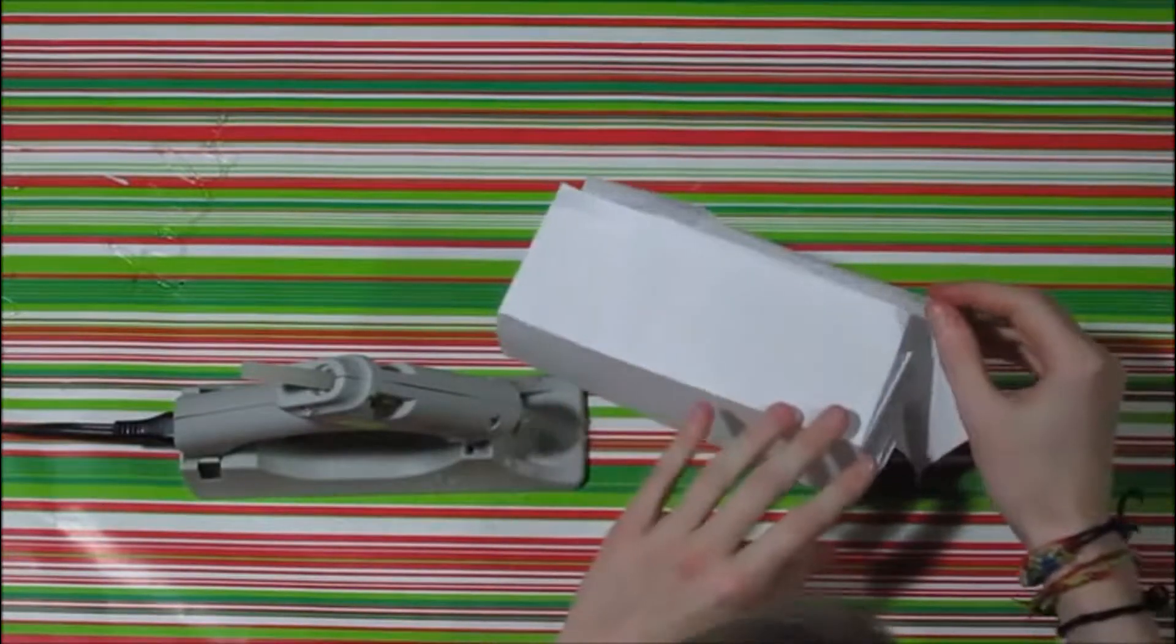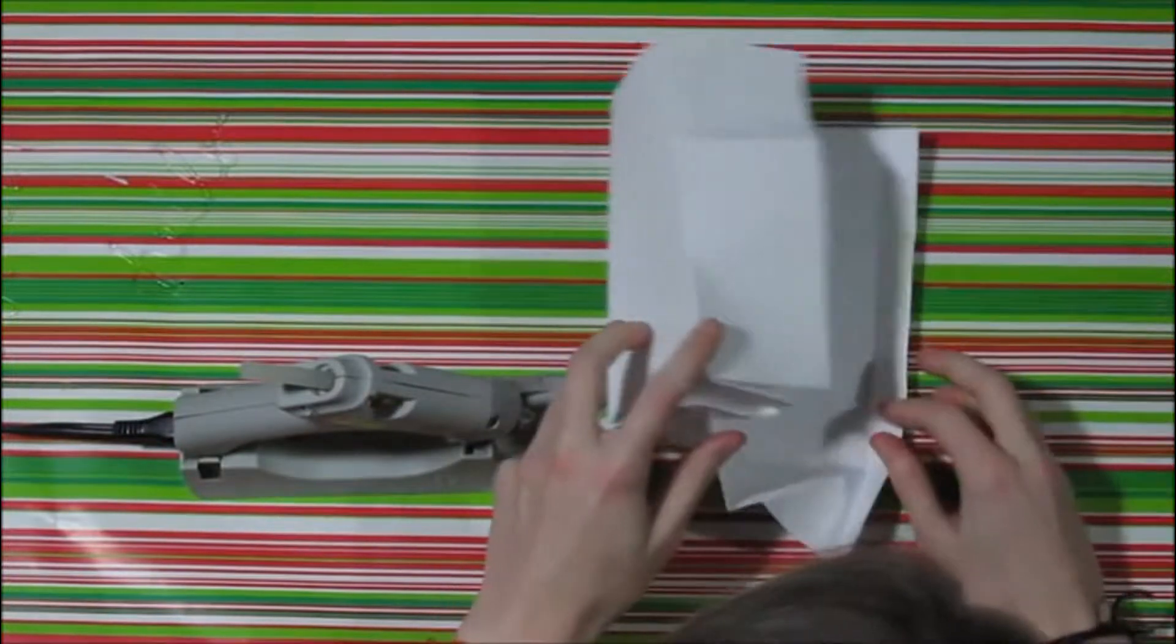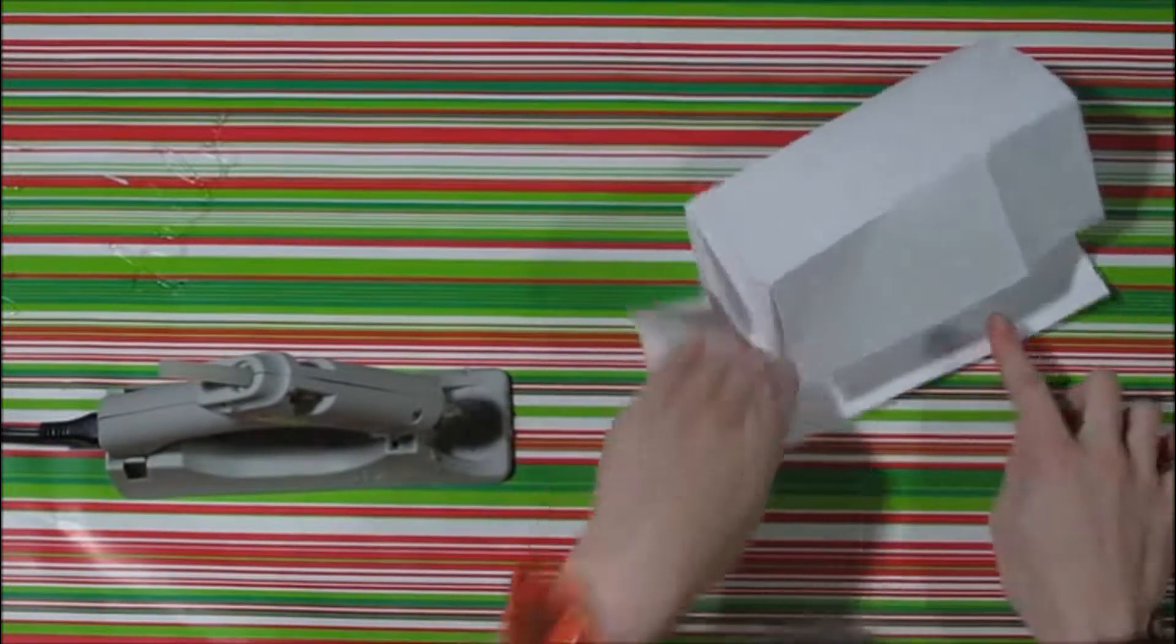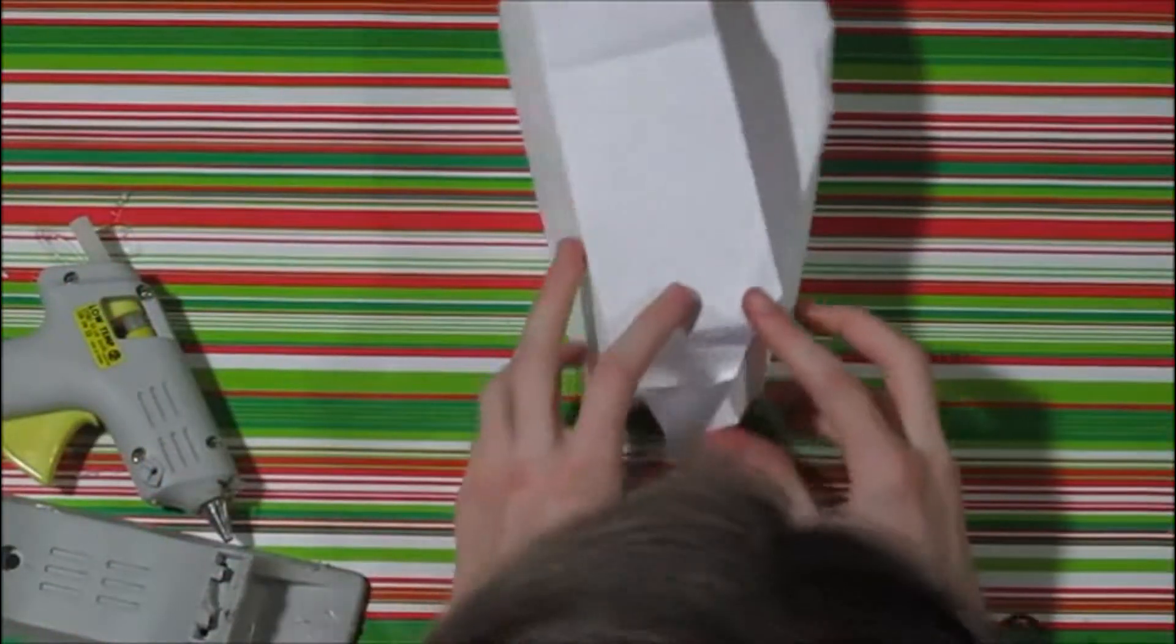So now what you're going to do is you're going to take your glue gun. You're going to put some glue on the little rectangle here.